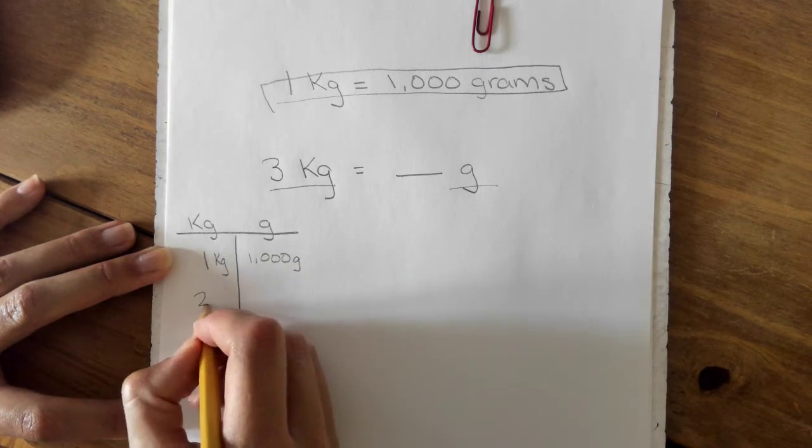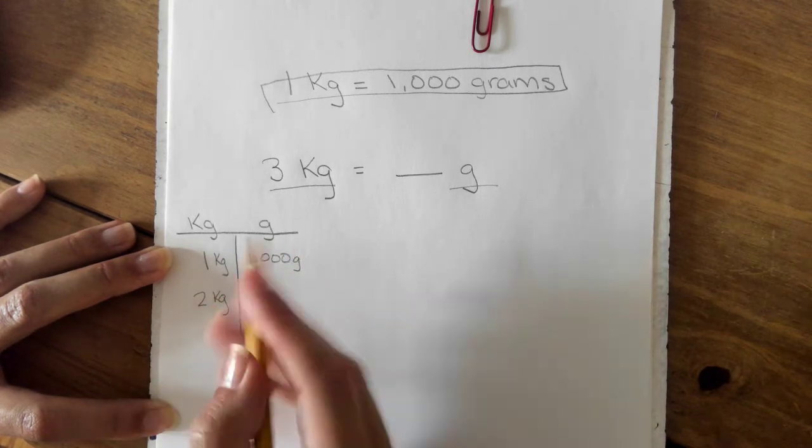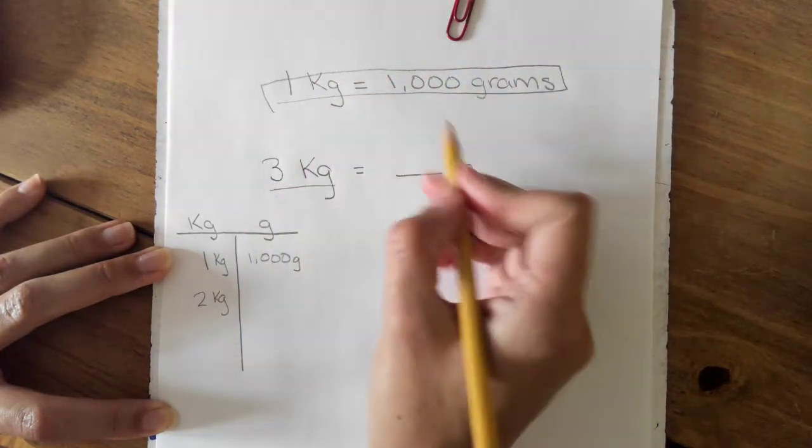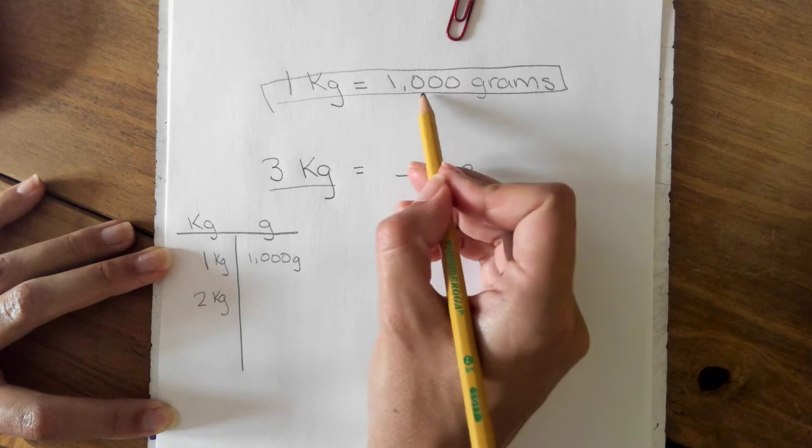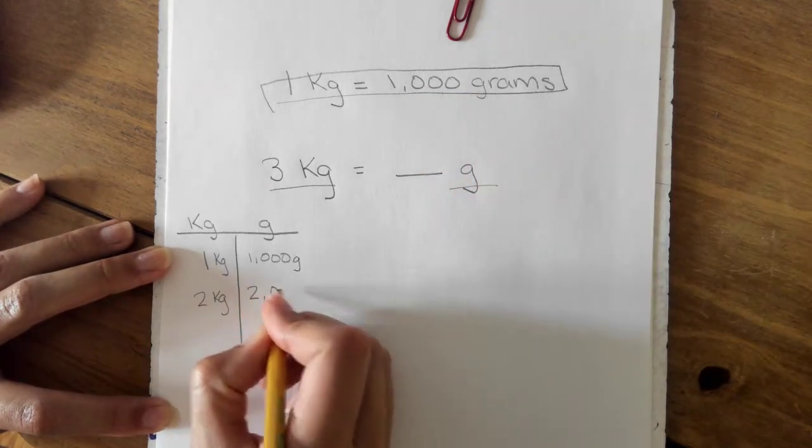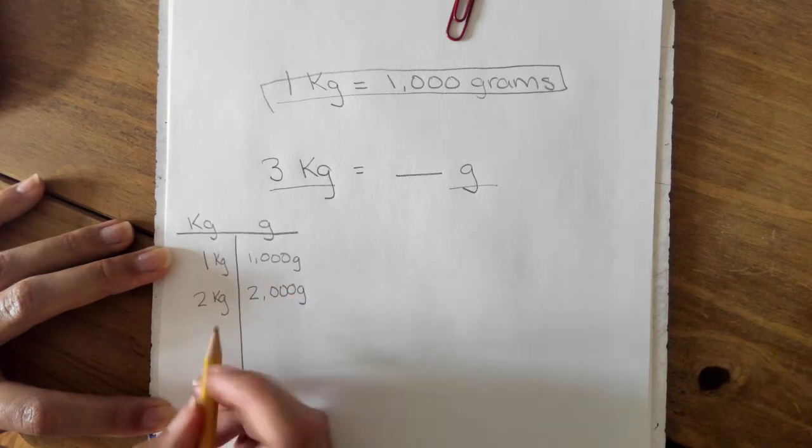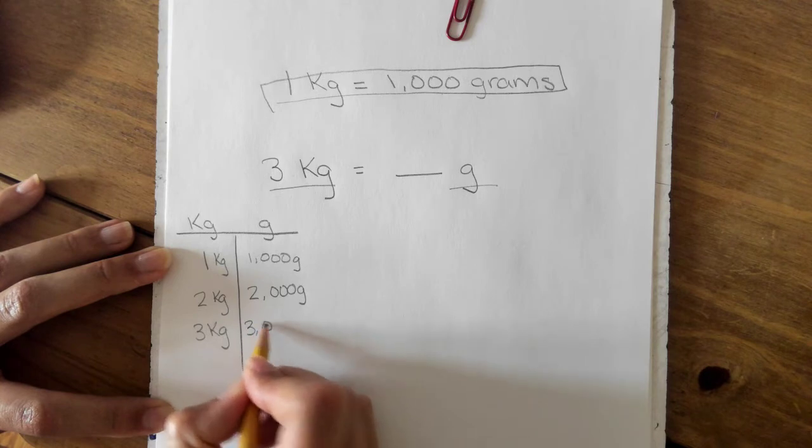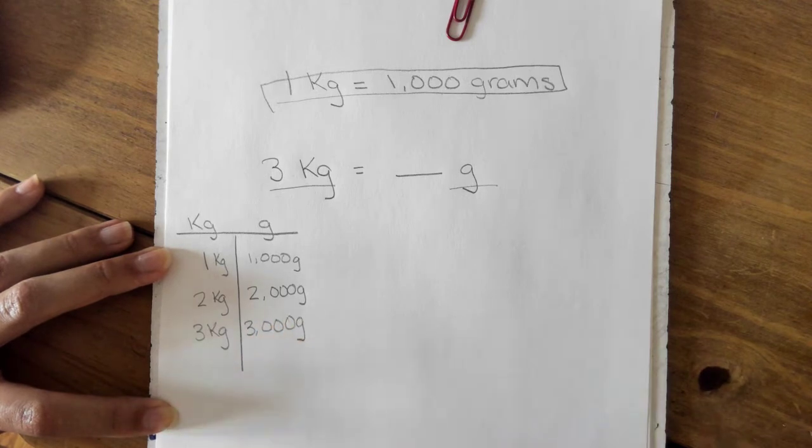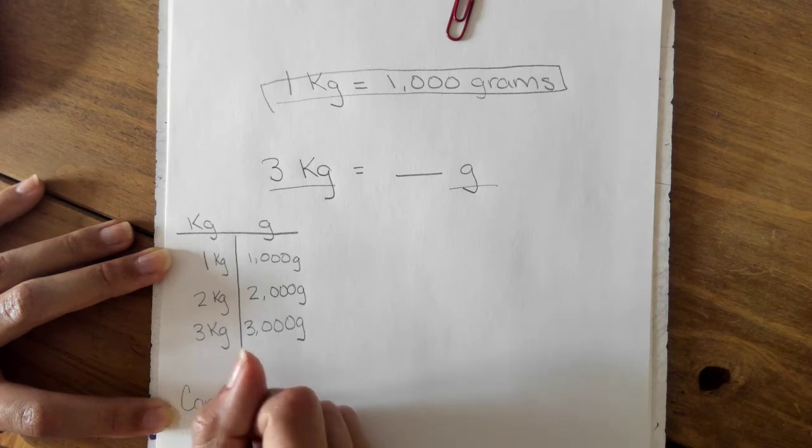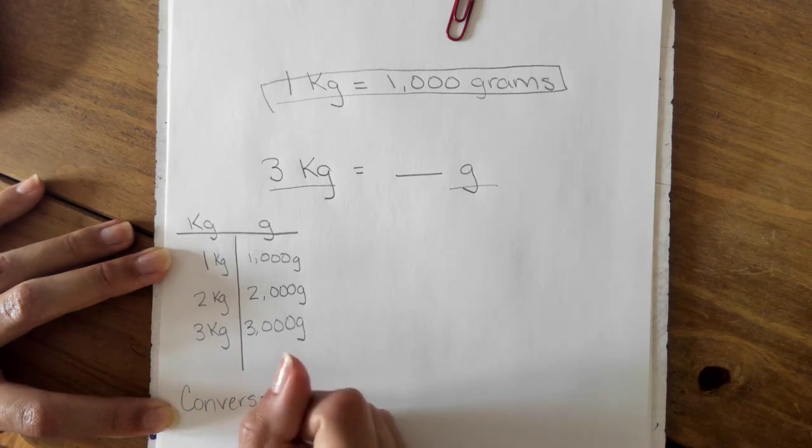So that would mean that two kilograms would be one thousand times two, because I would have two groups of one thousand, so that would be two thousand grams. So this would mean three kilograms equals three thousand grams. So that's the first strategy: using a conversion table.